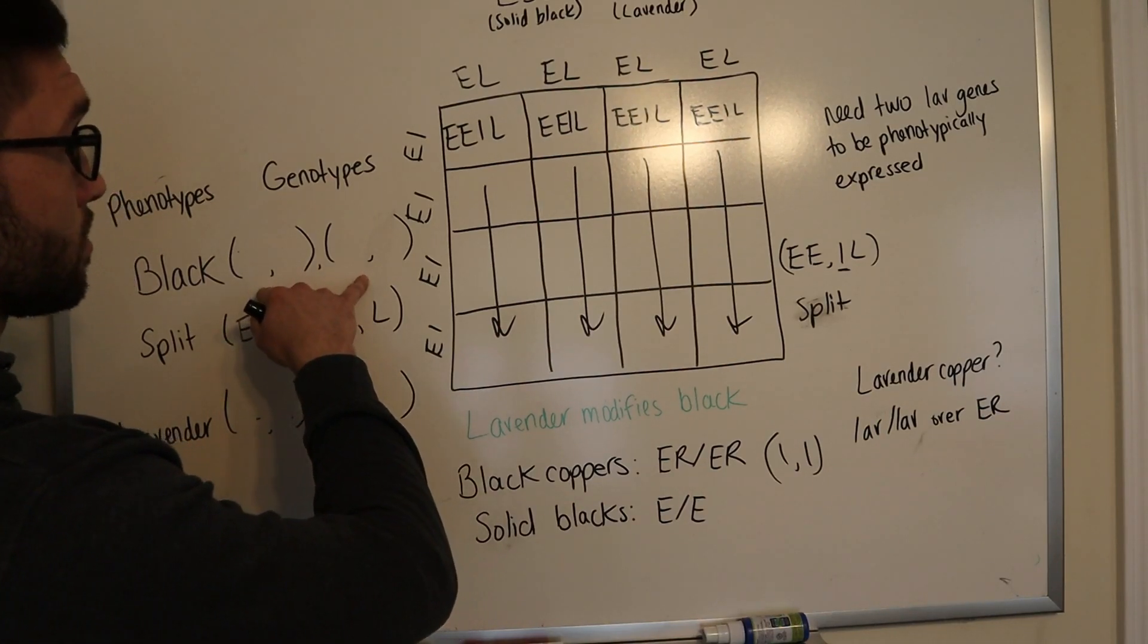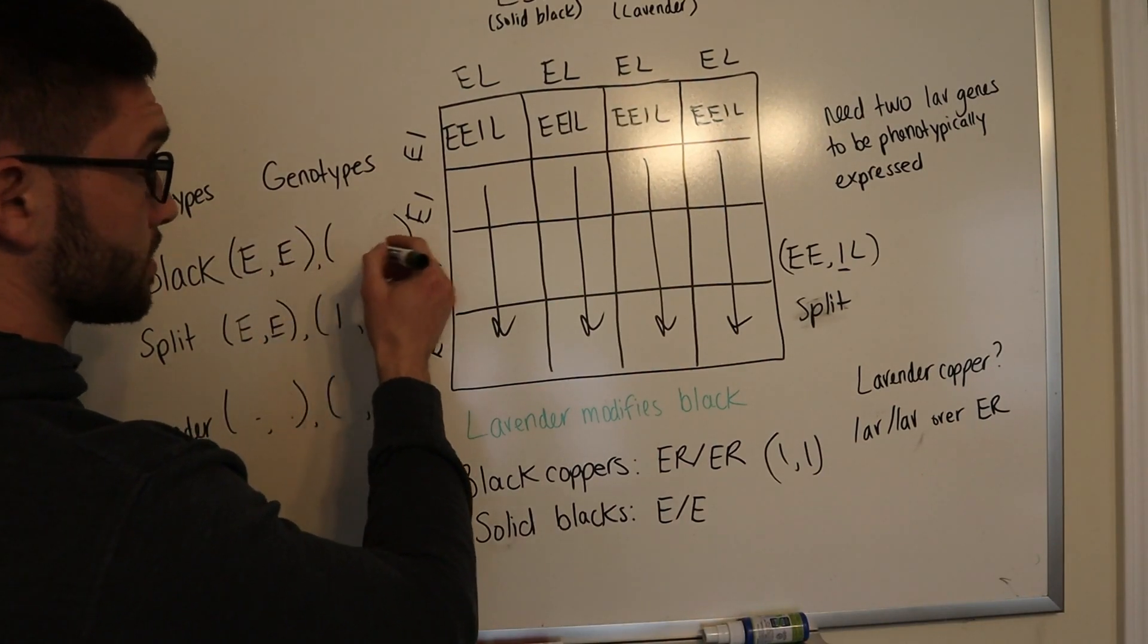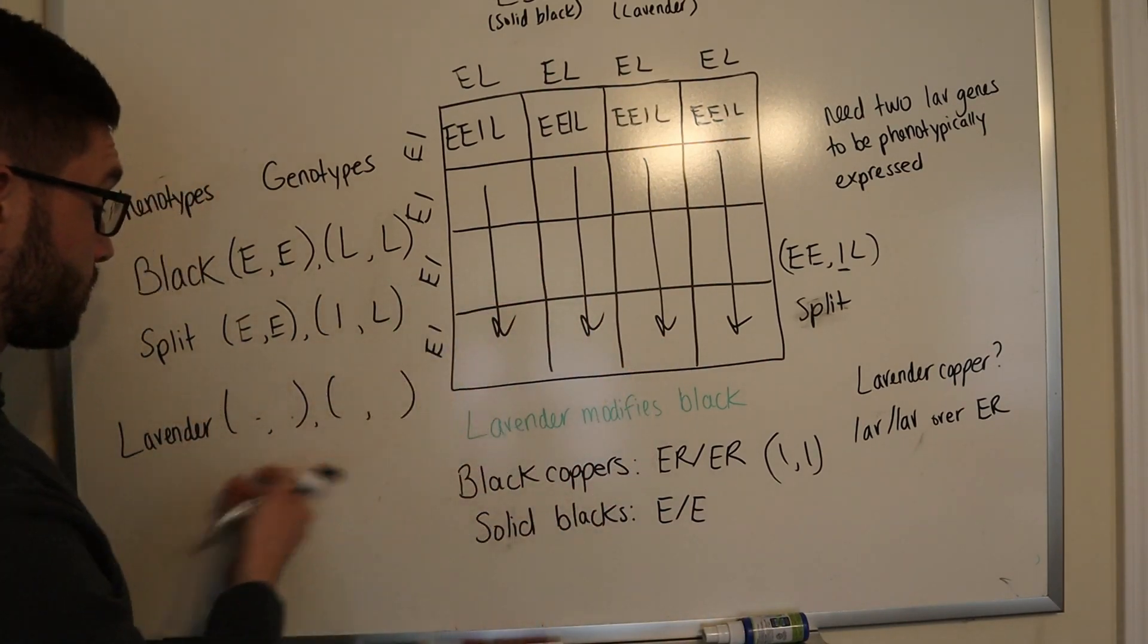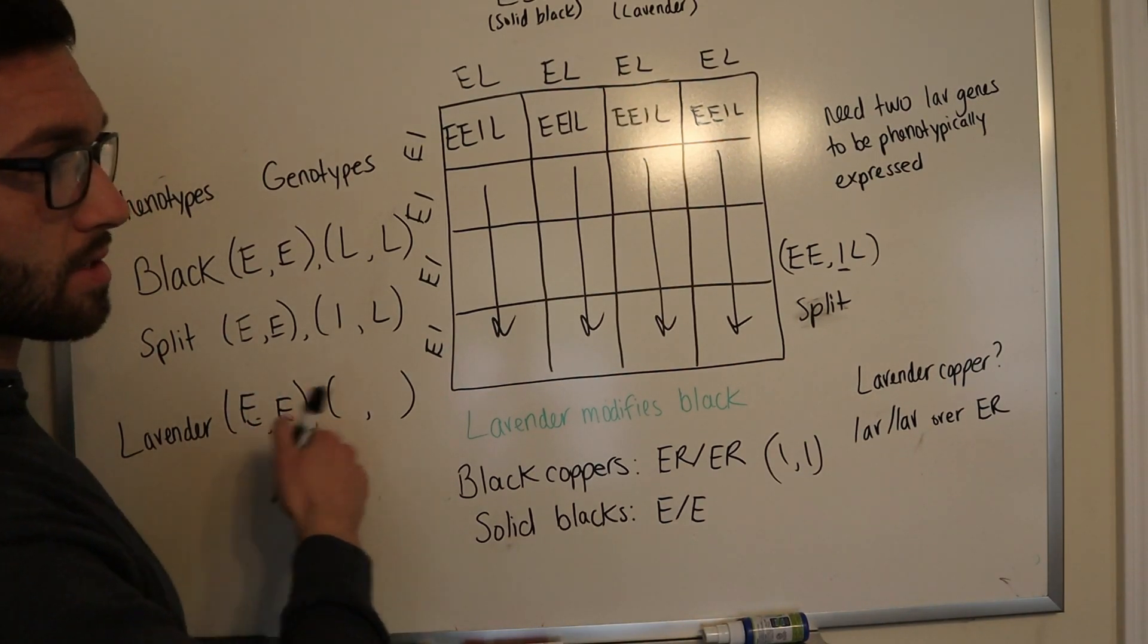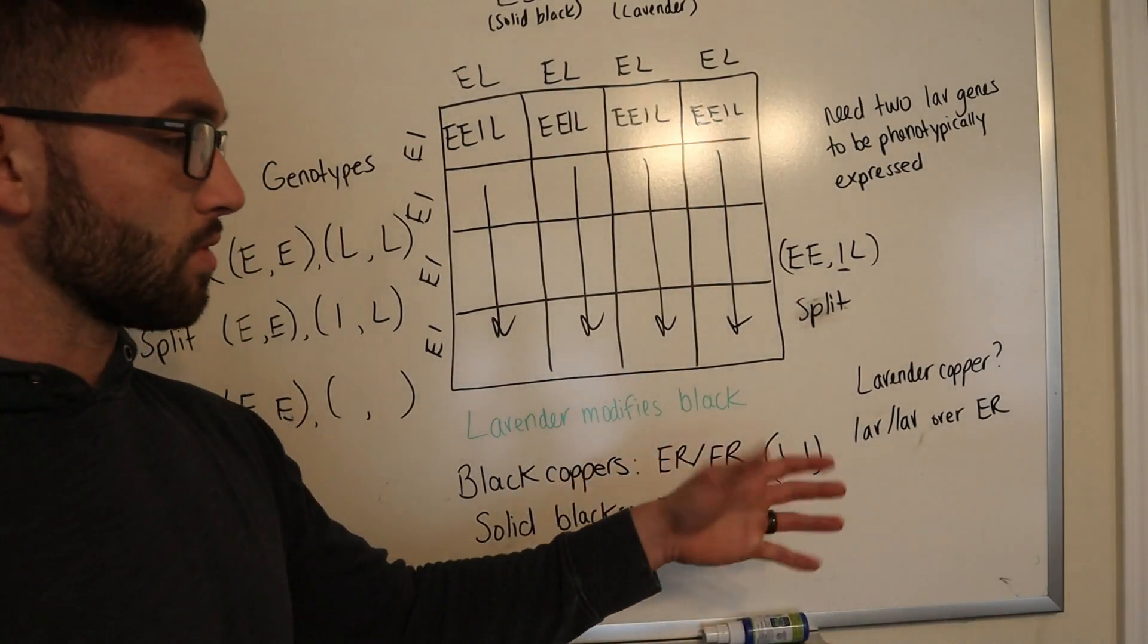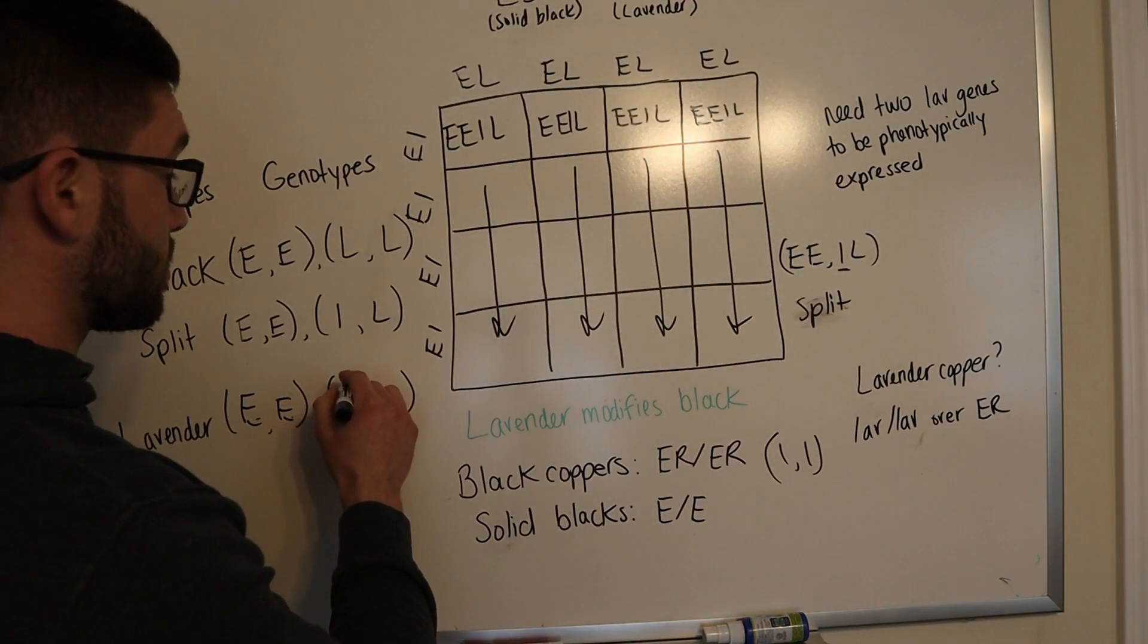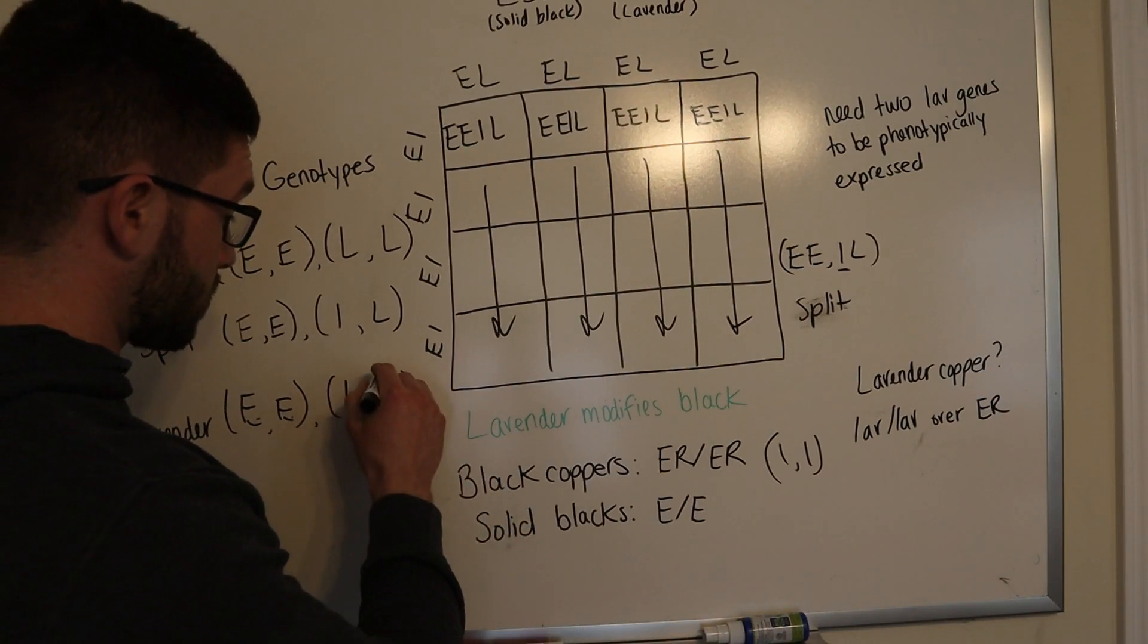the genotype of a solid black would be E, E. And it would be homozygous dominant for the lavender, which means that it's not carrying any lavender genes at all. It's not a lavender bird. It's a solid black bird. But for the lavender birds, it's again on the E, E base. These are almost always on the E, E base unless you put them over a black copper marin, which is on the ER base. There's no really name for that. I guess you would call it lavender copper. But if it's a lavender bird, it's E, E. And then it is homozygous recessive. It carries two lavender genes. So it's phenotypically expressed.